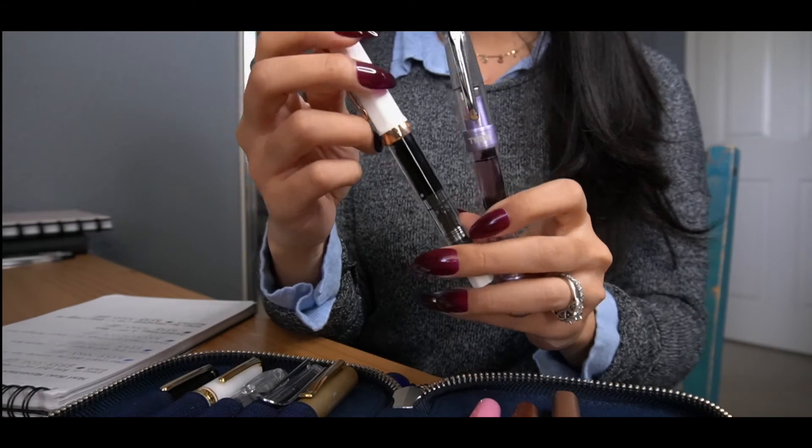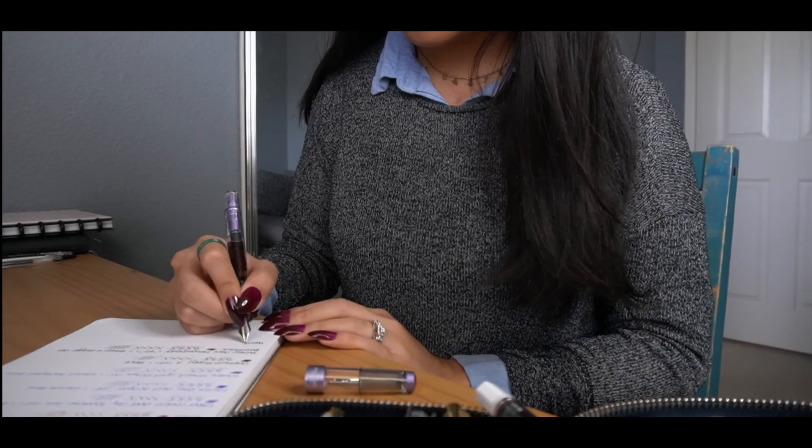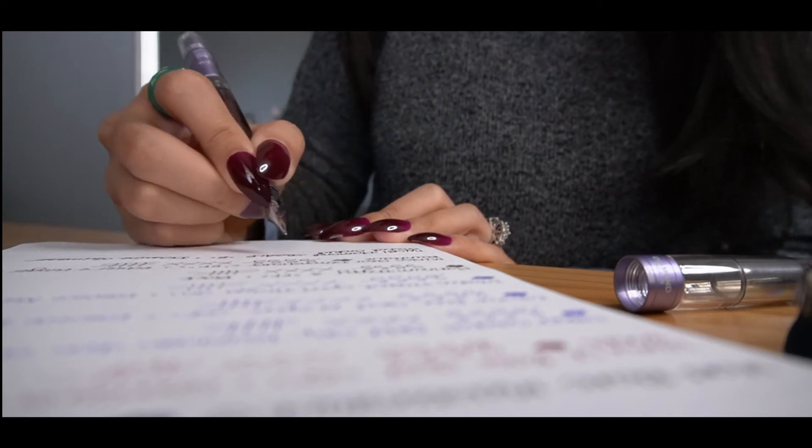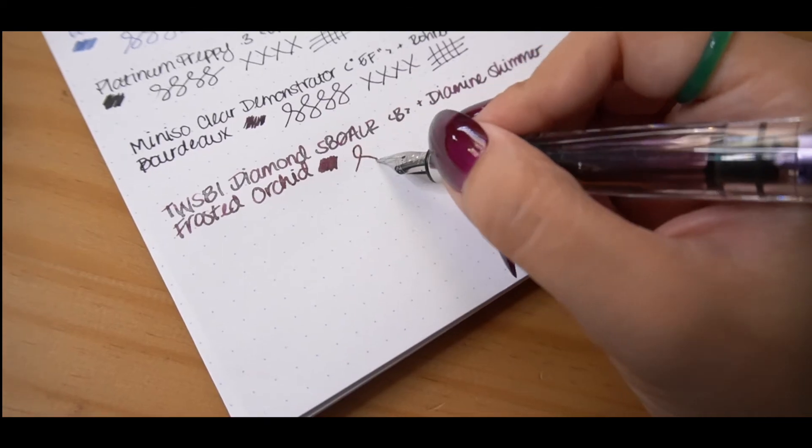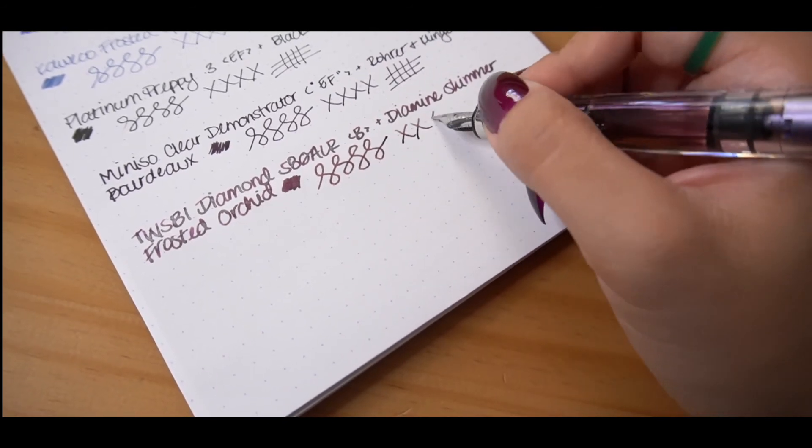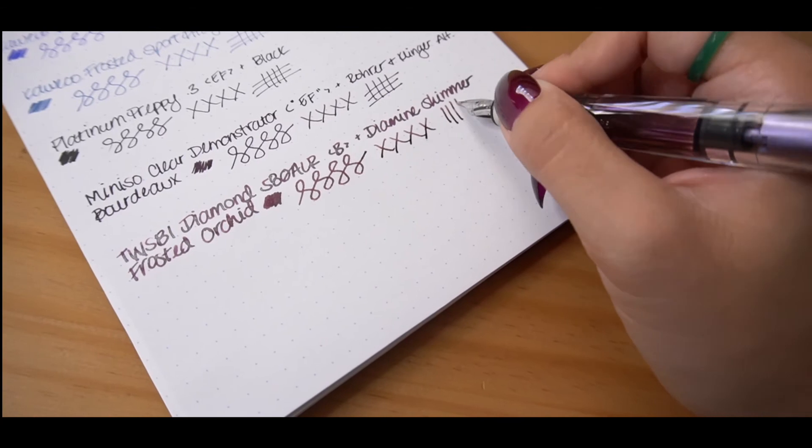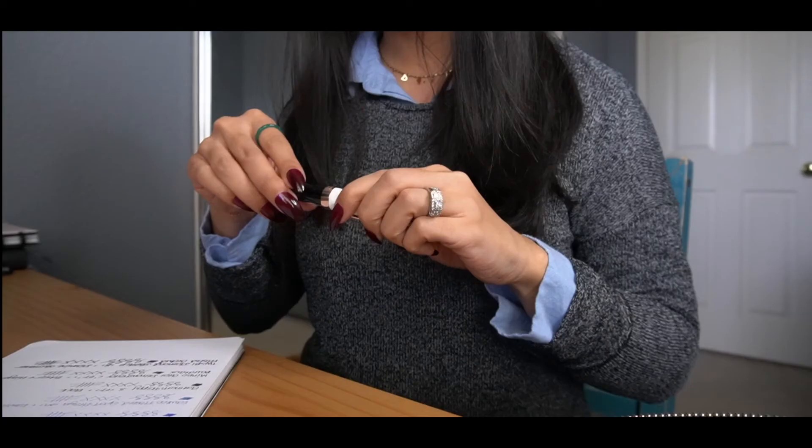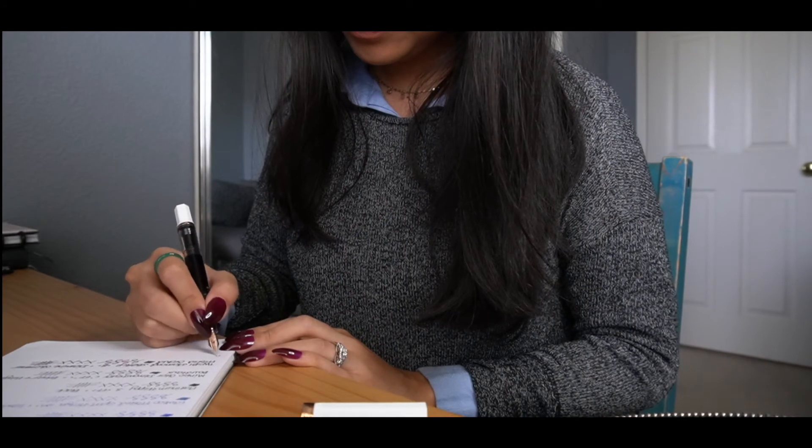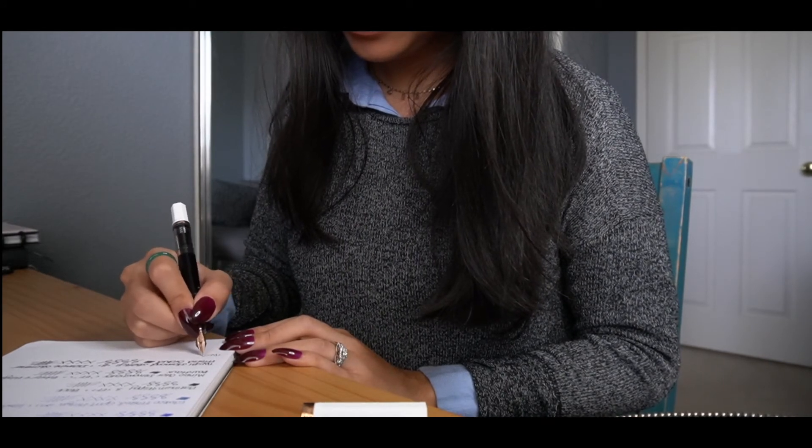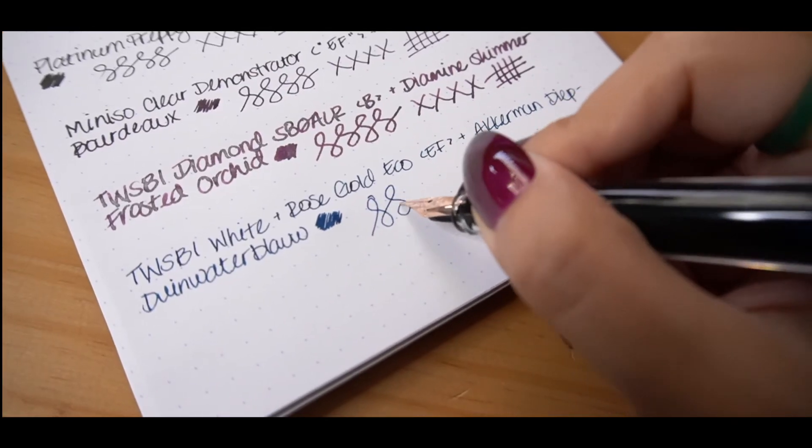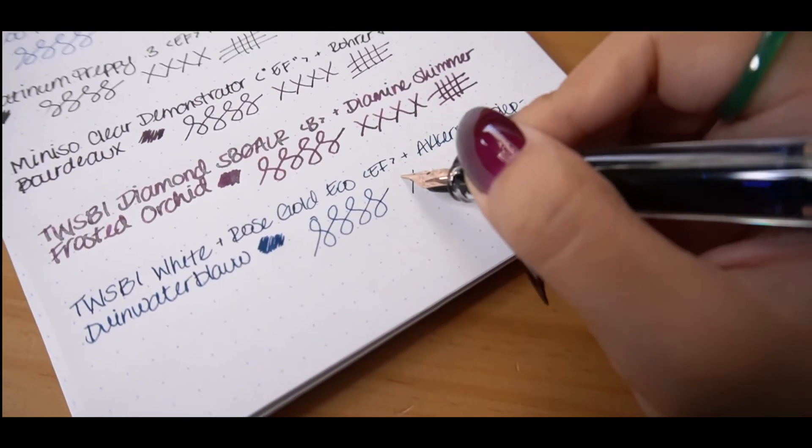These are also clear demonstrator fountain pens, but with a filling mechanism that we haven't discussed yet. These are piston filling pens. Unlike the cartridge converter pens, where you pop in an ink cartridge or converter to get ink into your pen, piston filling pens require no additional pieces. You simply twist the piston to draw ink from your ink bottle so that you can use any color that your heart desires. Piston filling pens also have a higher ink capacity, so you won't have to refill them as often.